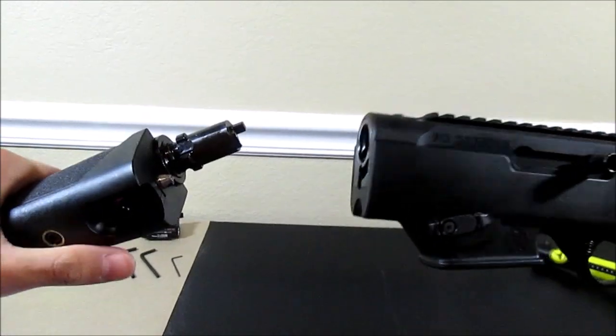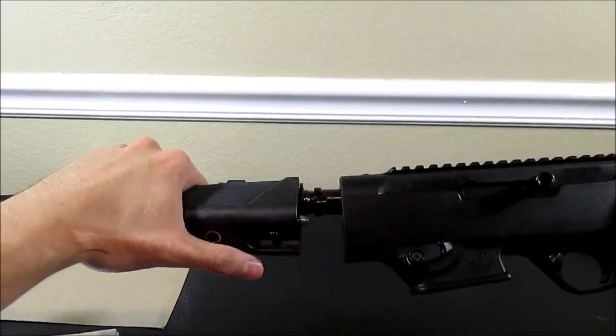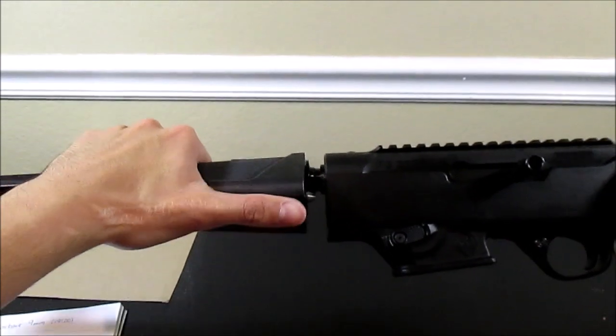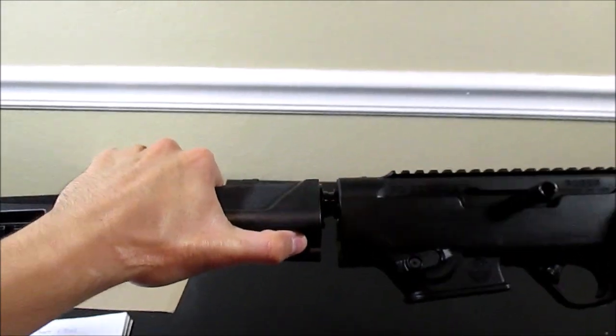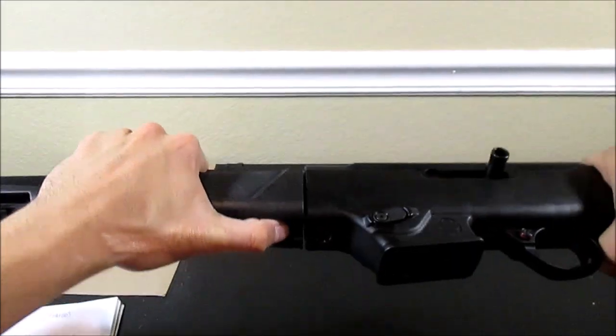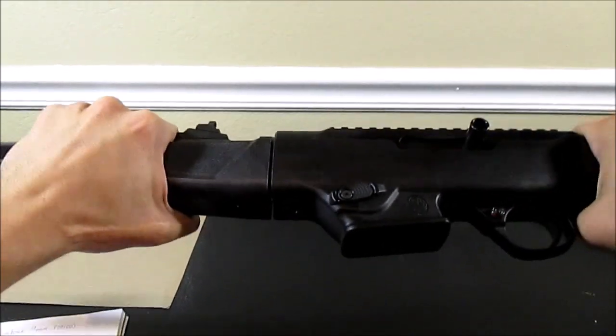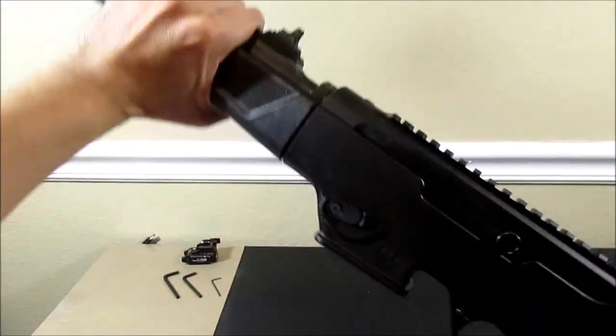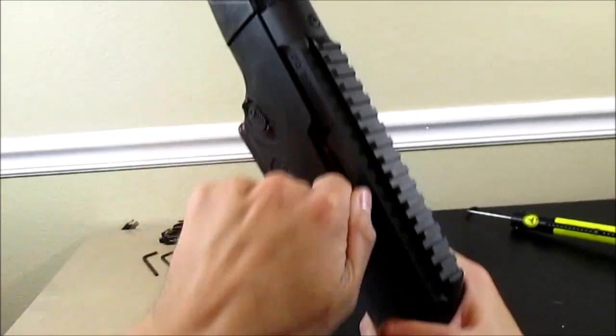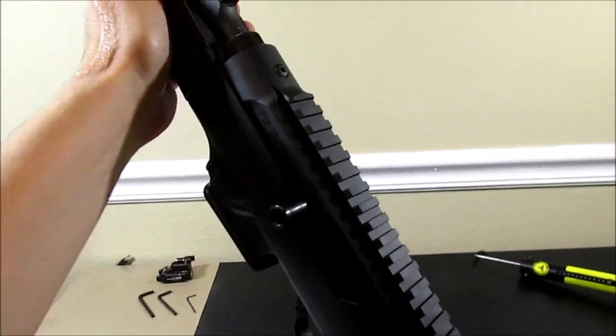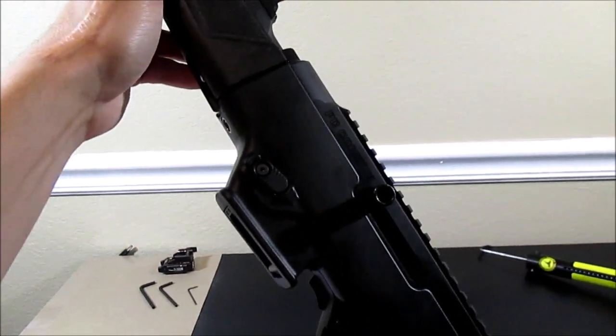And then to put it back together, you just line it up like this. Kind of wiggle it a little bit until you find where it locks in. I like to pull the takedown lever again. And then there you go. It's locked back up. Then you can just rack it a couple times and everything's all lined up.